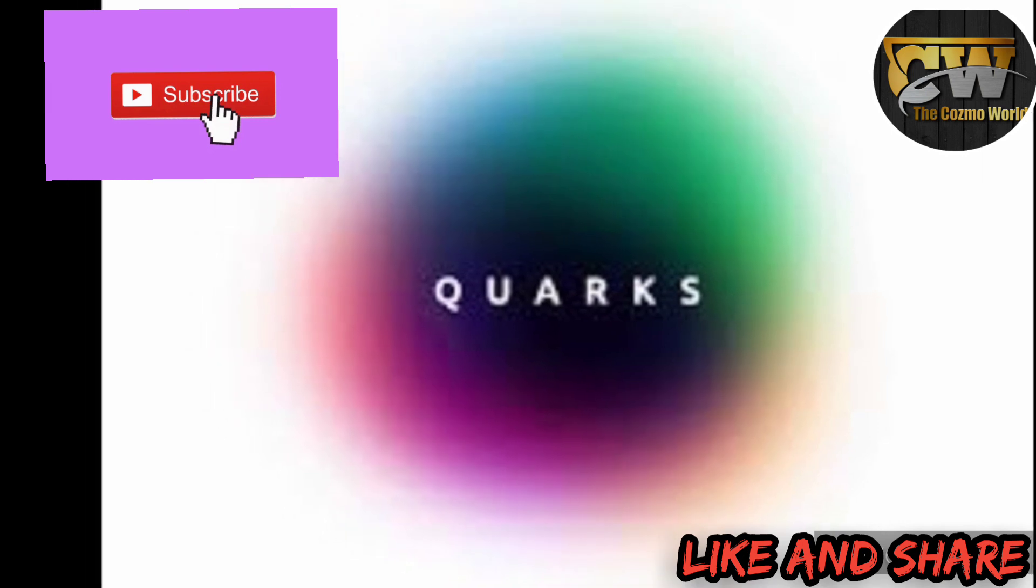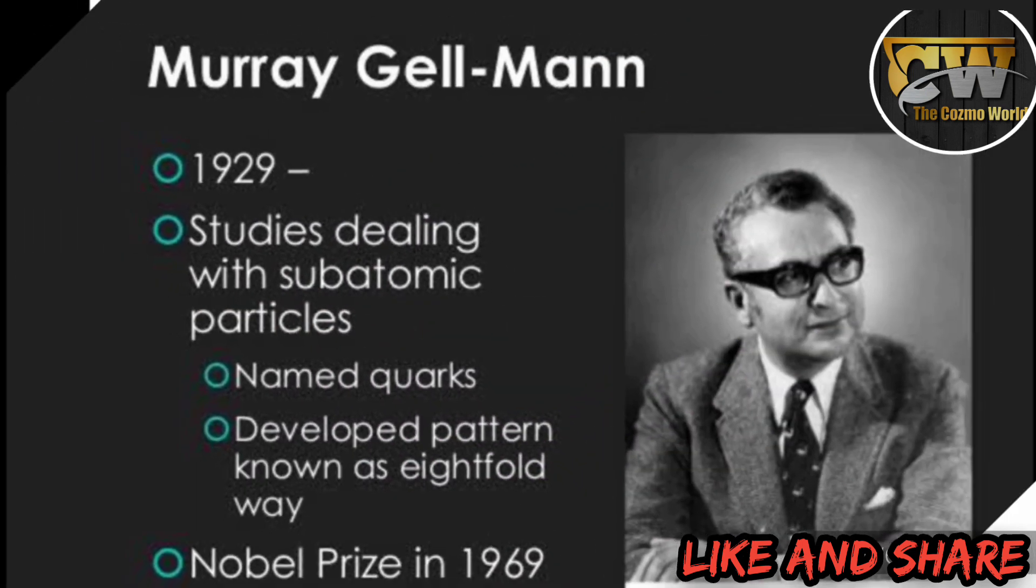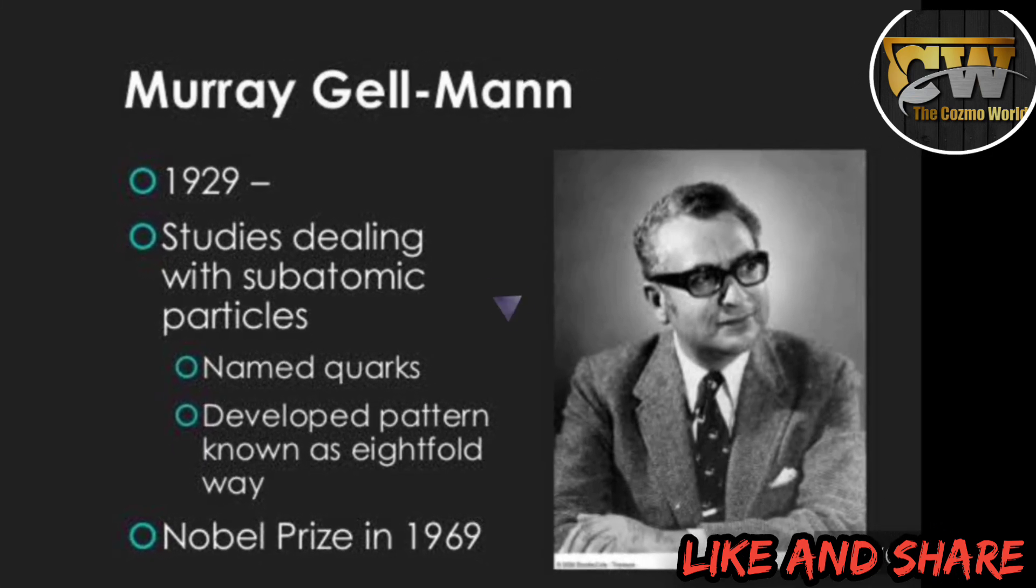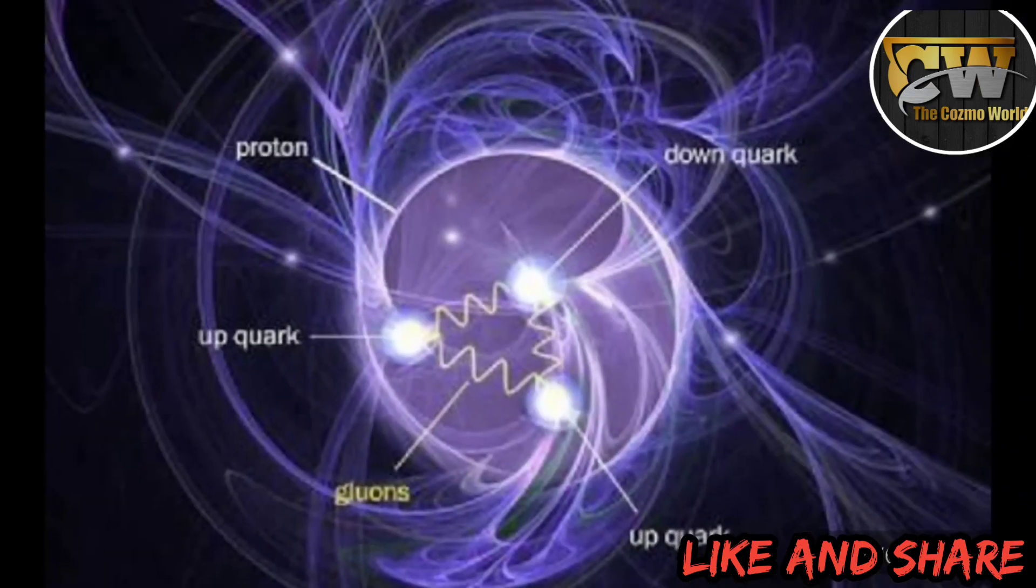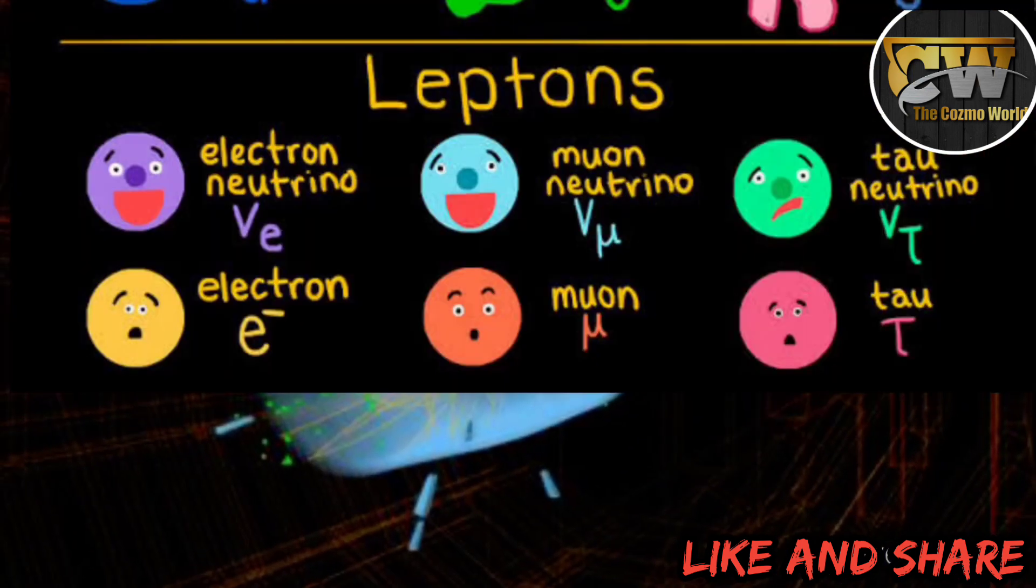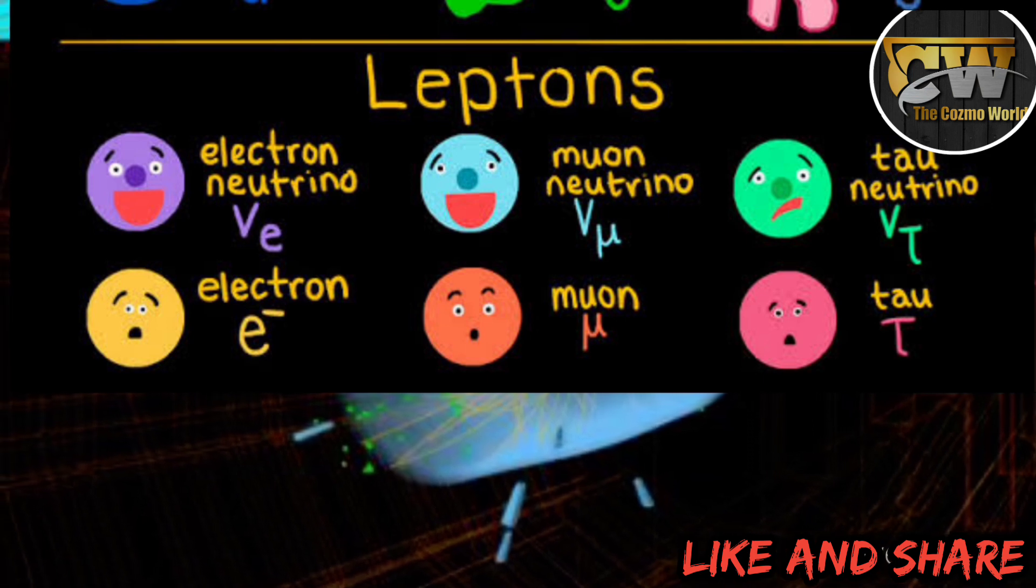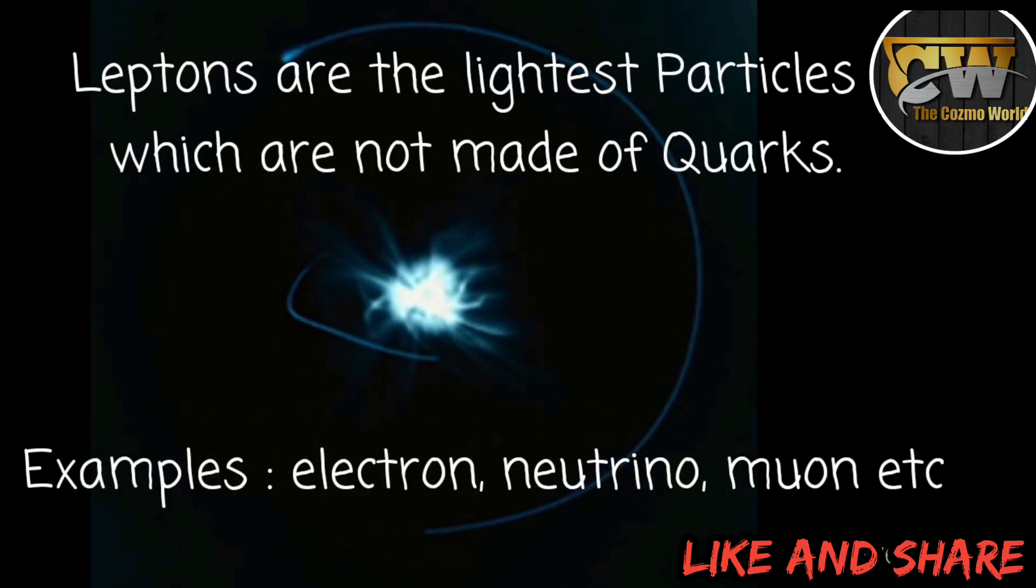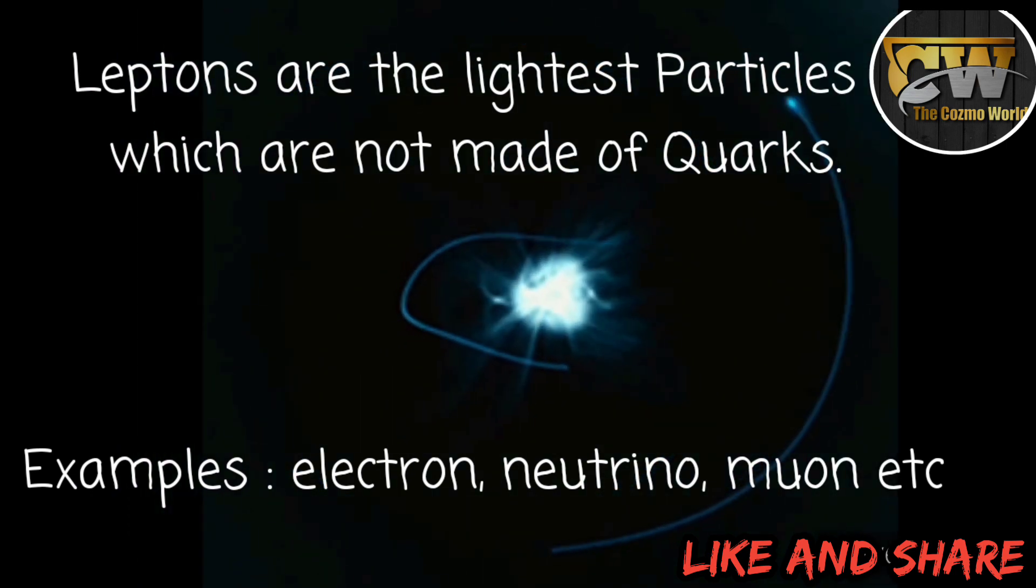The term quarks came about from an American physicist named Gelman. He borrowed the term from a line in James Joyce's Finnegan's Wake: three quarks for Mustermark. The leptons are a class of particles that includes the electron, muon, and neutrino. They are thought not to be made up of quarks.